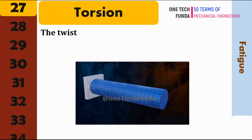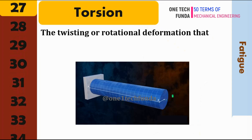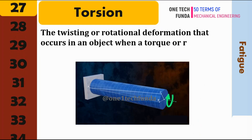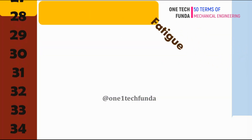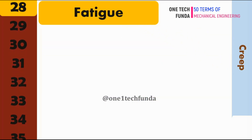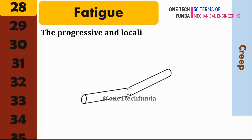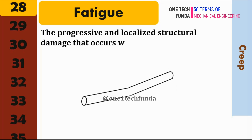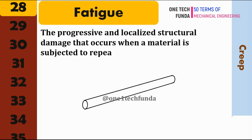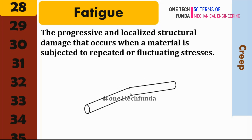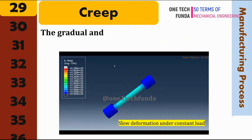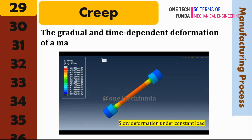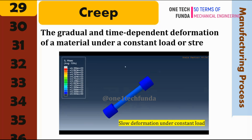Torsion: refers to the twisting or rotational deformation that occurs in an object when a torque or rotational force is applied along its length. Fatigue: the progressive and localized structural damage that occurs when a material is subjected to repeated or fluctuating stresses. Creep: the gradual and time-dependent deformation of a material under a constant load or stress.